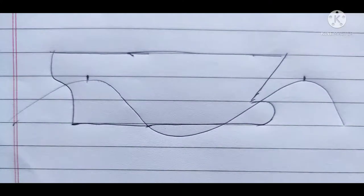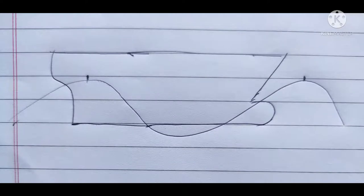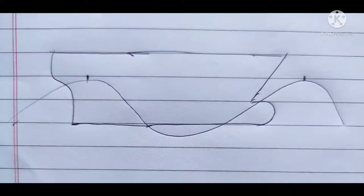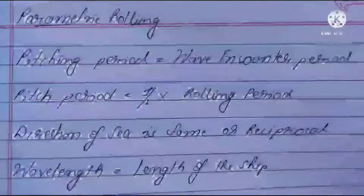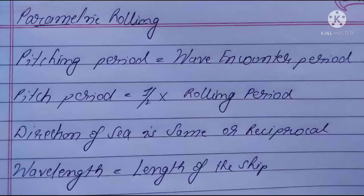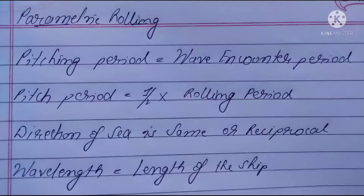The second thing we need to know is the wave encounter period. It is defined as the period of time that the ship takes to pass two consecutive crests or two consecutive troughs. The conditions favorable for parametric rolling are: the pitching period is equal to the wave encounter period.